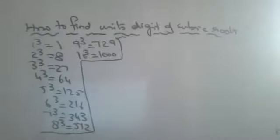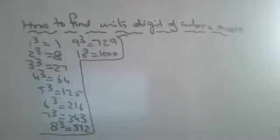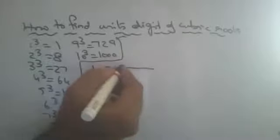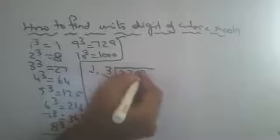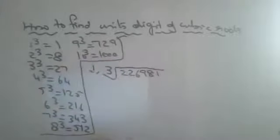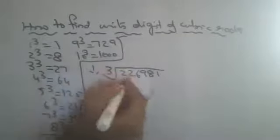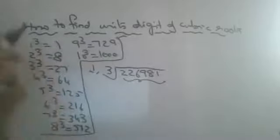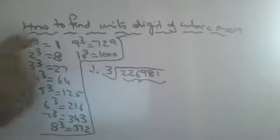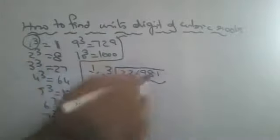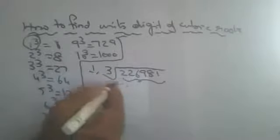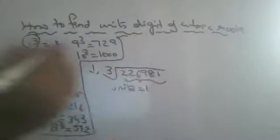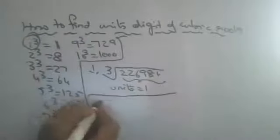I will explain five examples first, then give some sums as homework. First question: what is the units digit of the cubic root of 22698? Look at the last digit — which cube number gives a units digit of 1? Only 1³=1 gives units digit 1. So the answer is 1, no matter what large number it is.